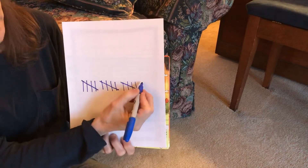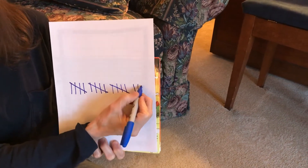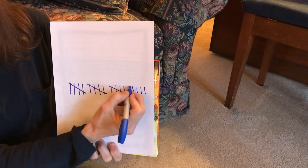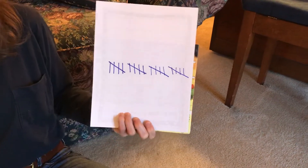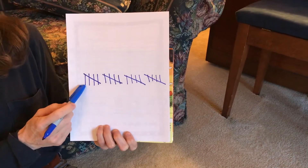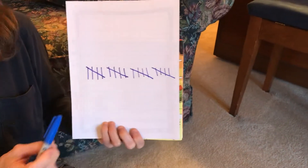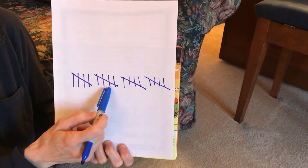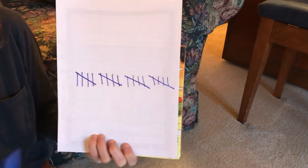If we do one more, that will be sixteen, seventeen, eighteen, nineteen, twenty. So when we represent numbers by using tally marks, it groups them so that we can count by fives: five, ten, fifteen, twenty.